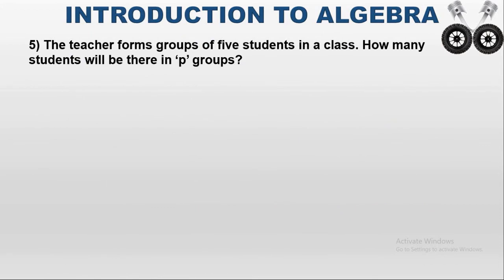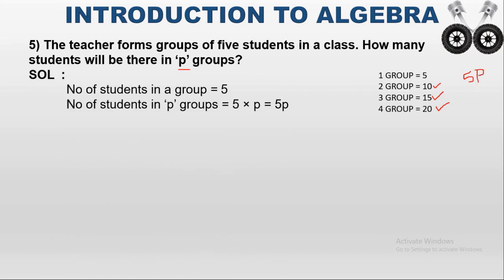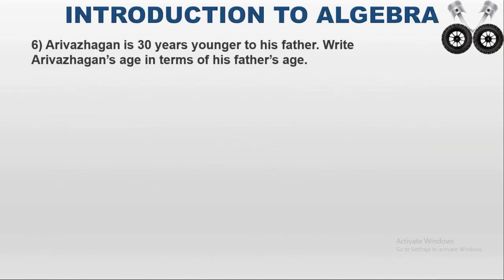Question number 5: a teacher forms groups of 5 students in a class. How many students will there be in p groups? If the teacher forms 1 group, there are 5 students. For 2 groups, 10 — that is 5 added 2 times. For 3 groups, 15 — 5 added 3 times. For 4 groups, 20 — 5 added 4 times. Since 5 is added repeatedly, we multiply. The general term given is p, so the answer is 5p.